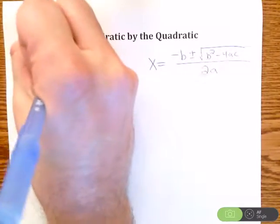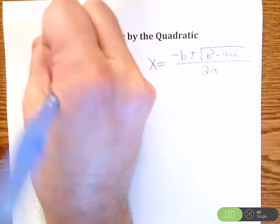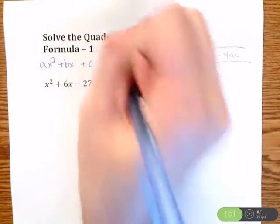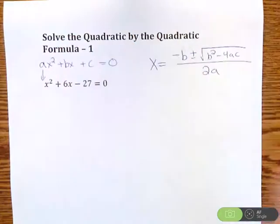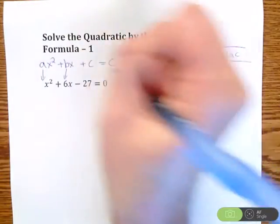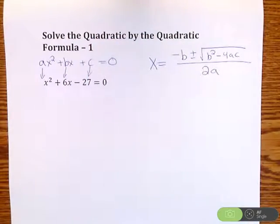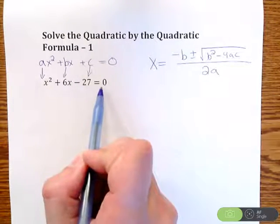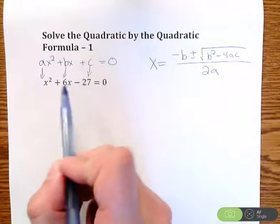Where they come from is you have ax squared plus bx plus c equals 0 for a quadratic. So a is always the number in front of x squared. b is always the number in front of x. And c is our constant at the back. The other thing that you need to notice is this needs to be equal to 0. Always start with it equal to 0.